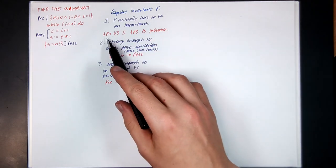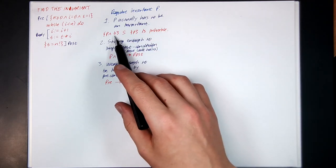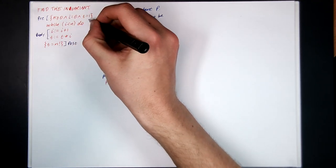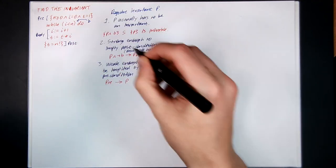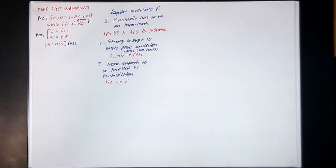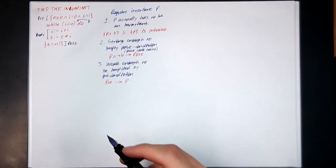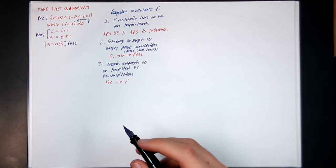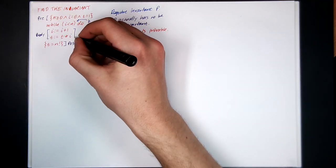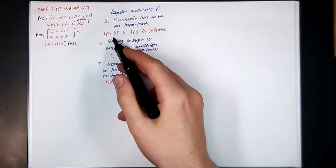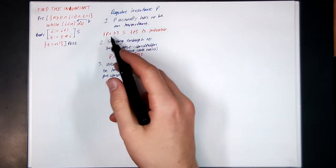It has to satisfy the property that if the loop condition B — the statement here is my B — if the loop condition is true and P is true before you run the code, P should still be true after you run the code. So P is invariant of the code S, sometimes called the body. This whole triple here needs to be provable.